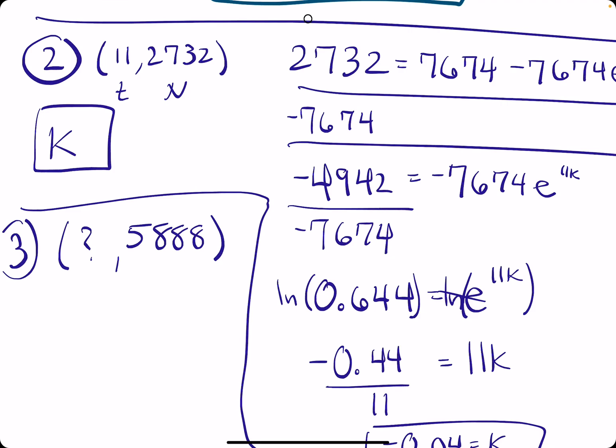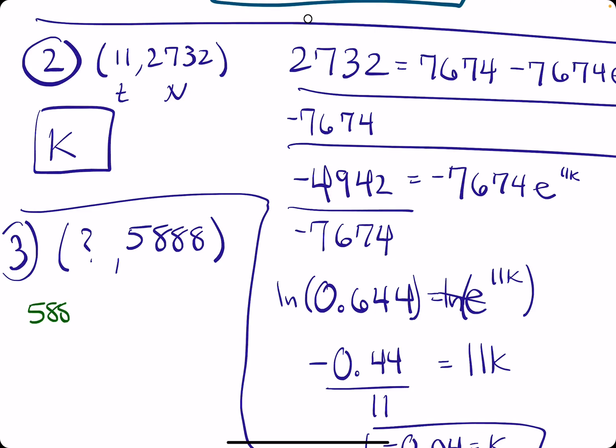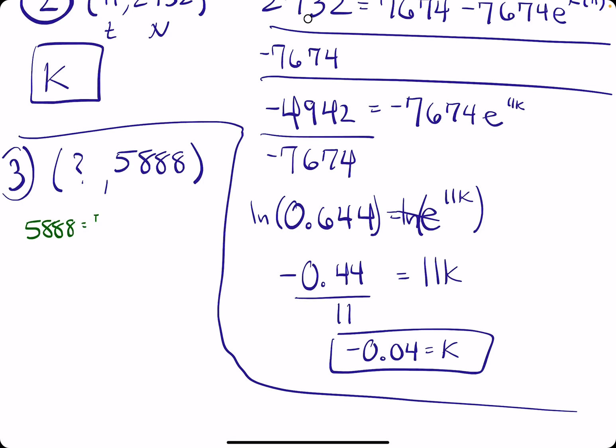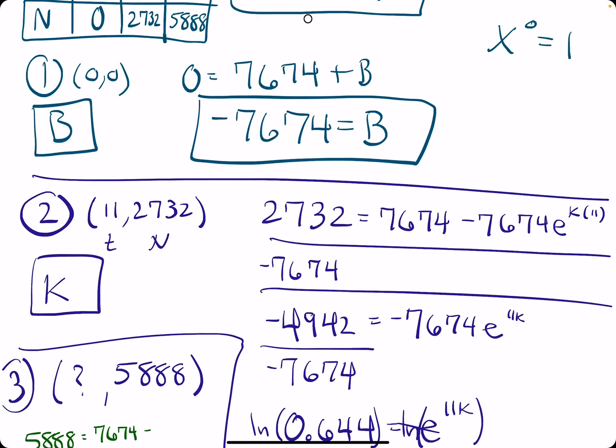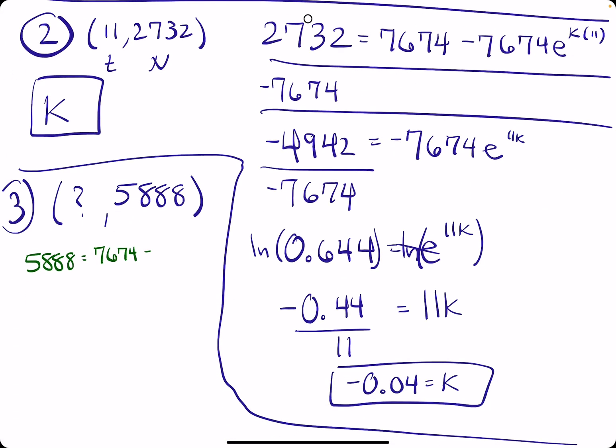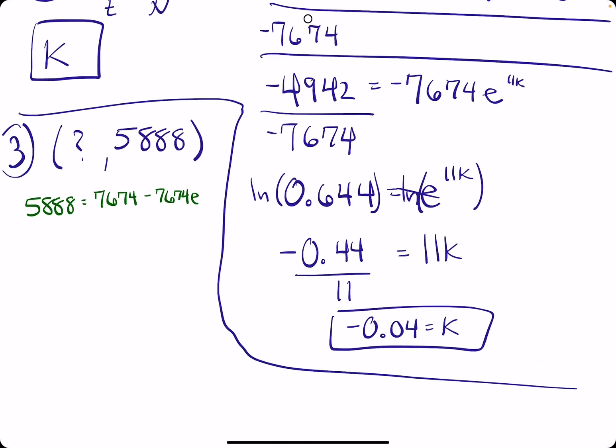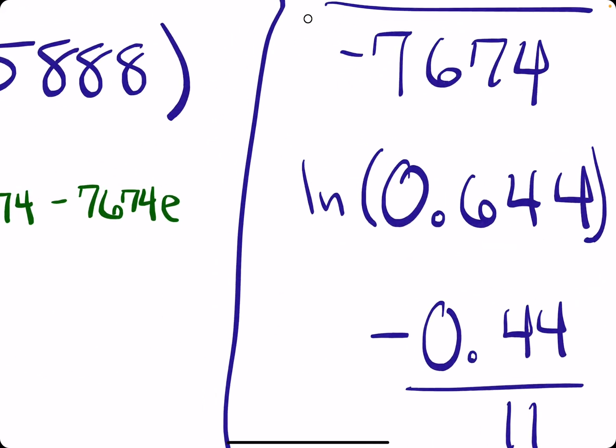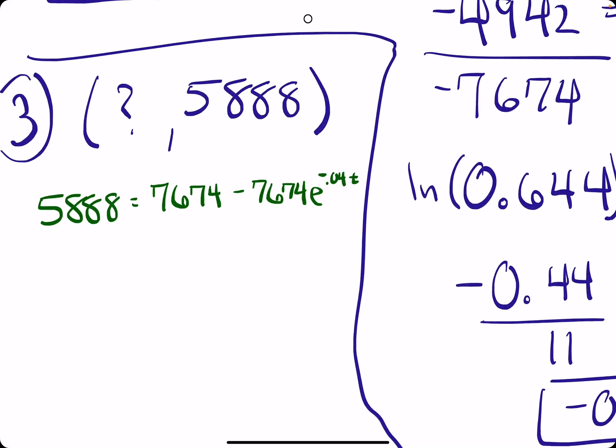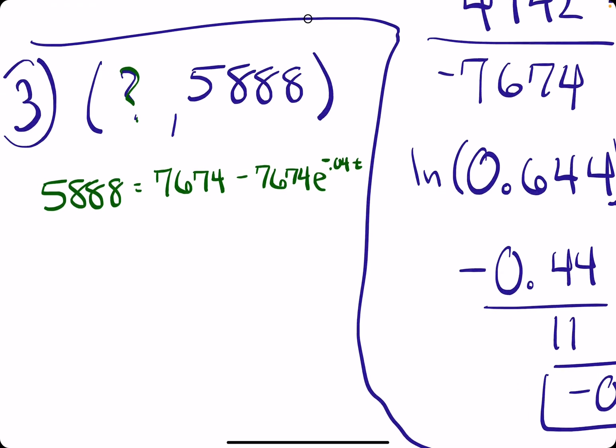So we have 5888 equals A value of 7674 plus our B value of negative 7674 times E to the K, which is negative 0.04, times T. We are solving for T because we don't know T.